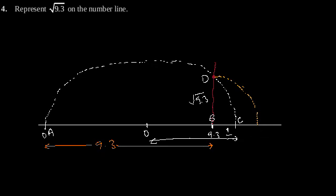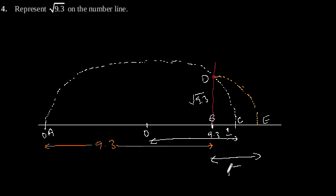Suppose this intersection point is E. The length of BE is √9.3. Hence, in this way we can represent √9.3 on the number line.